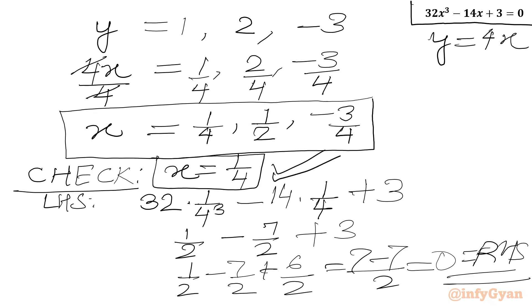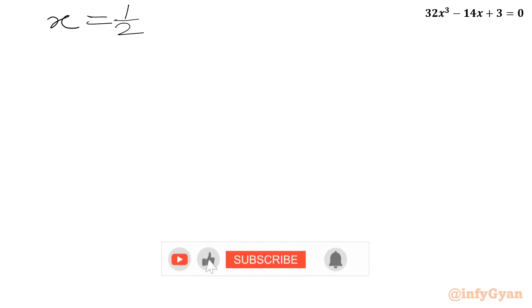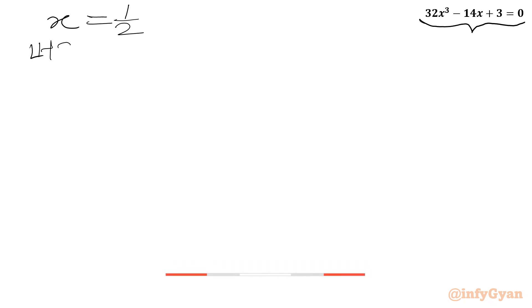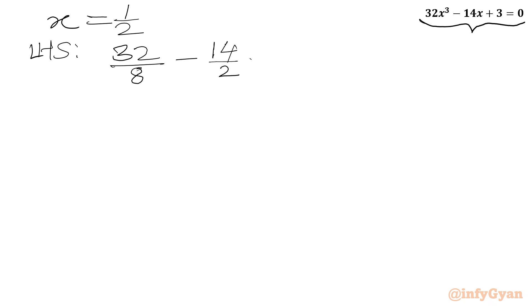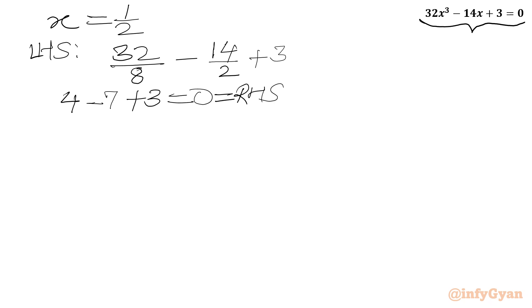Now we will check x = 1/2. Starting from the LHS: 32 times (1/2)³ = 32/8 = 4, minus 14/2 = 7, plus 3. So 4 - 7 + 3 = 0, which equals our RHS. Hence our solution x = 1/2 is also verified.